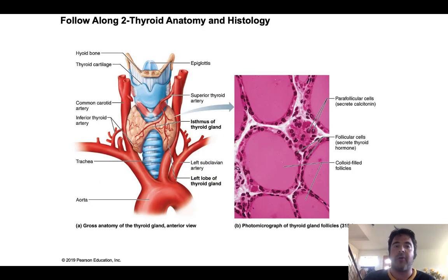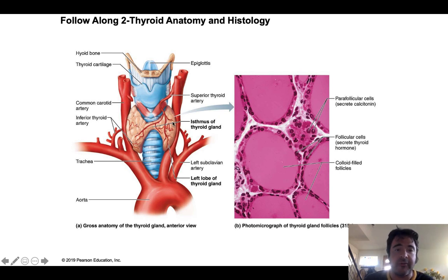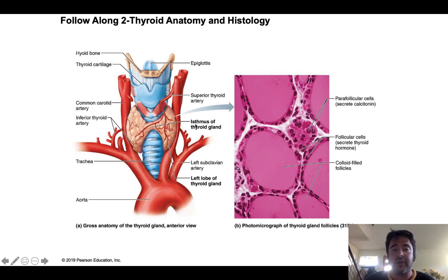When we think about the thyroid gland, it is just inferior to the larynx, which we think of as our voice box. Here's the thyroid gland with its different lobes. Working from the patient's perspective, you have the right lobe and the left lobe of the thyroid gland, and the chunk of thyroid tissue that attaches the two lobes is called the isthmus of the thyroid gland.